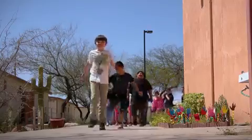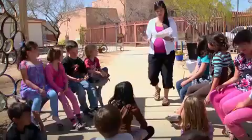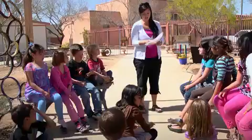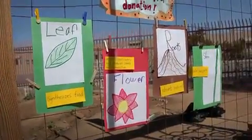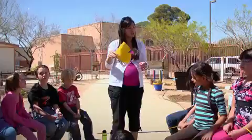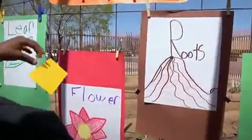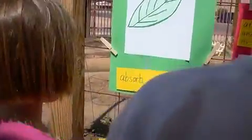The students come out to the garden and we split up into three different groups. One group works on identifying plant parts. With this group the first thing you're going to do is take these yellow cards, which have definitions, and tape them next to what you believe the role is for each one.